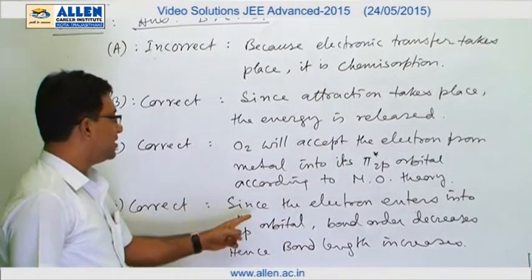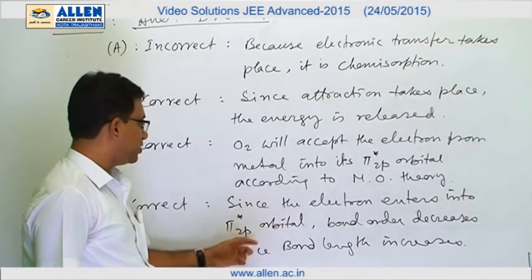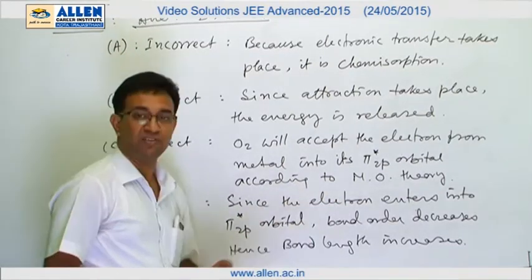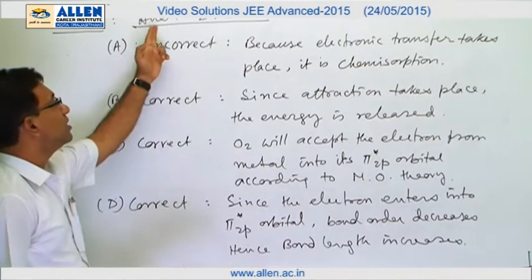D is correct, since the electron enters into the pi star 2p orbital, the bond order decreases, hence the bond length increases and the answer is BCD.